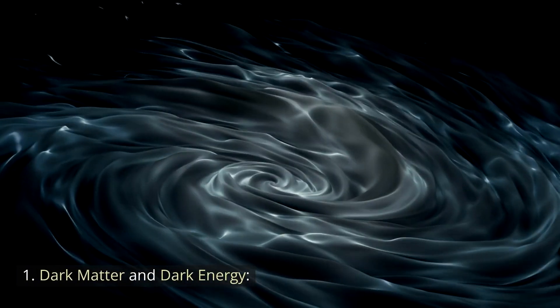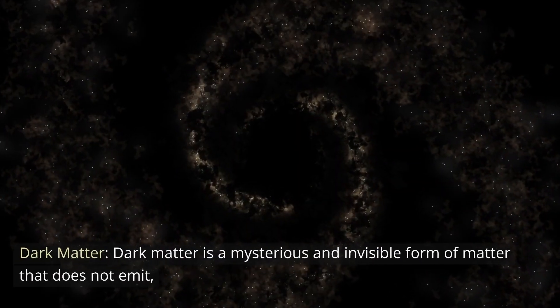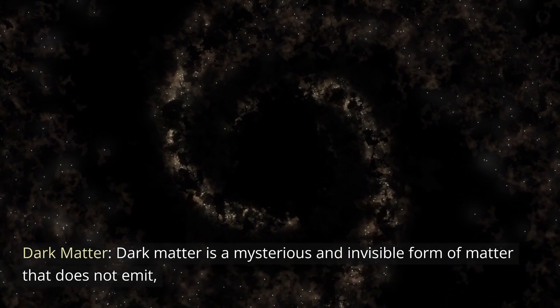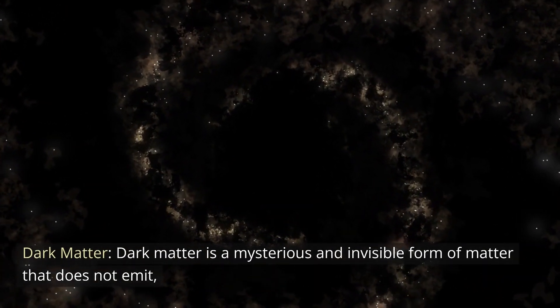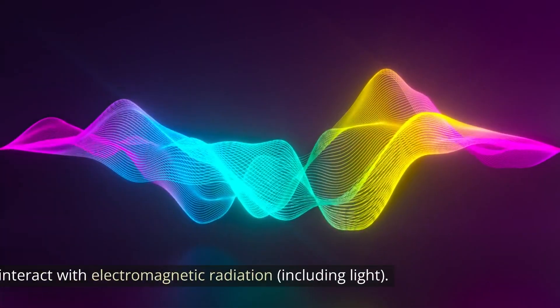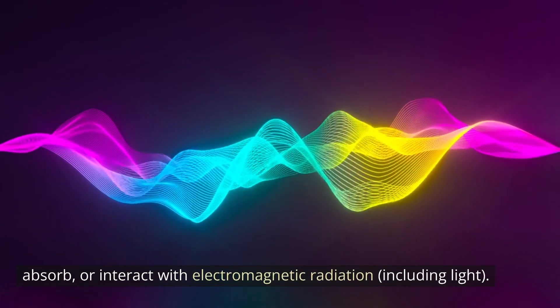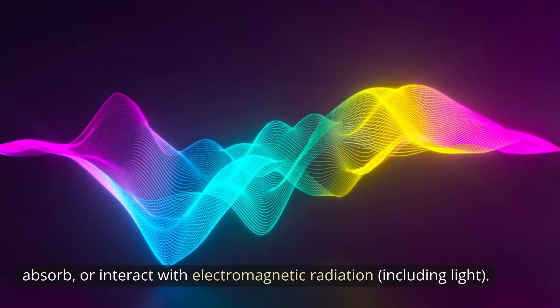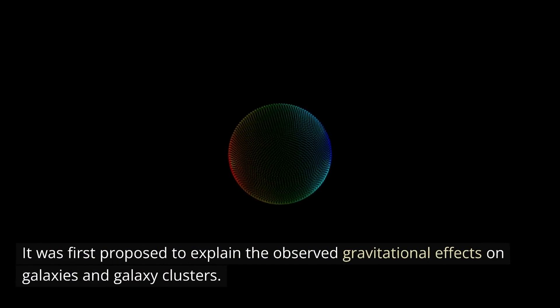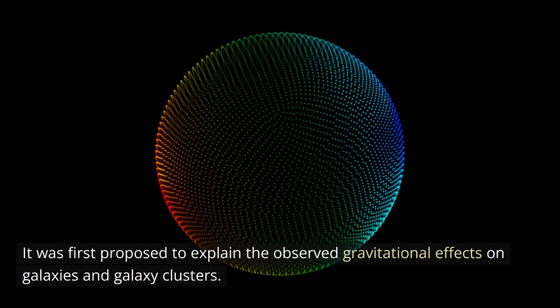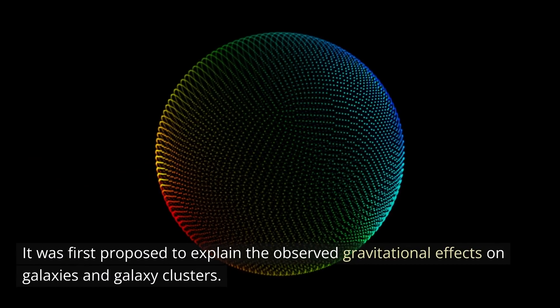Number 1. Dark Matter and Dark Energy. Dark matter is a mysterious and invisible form of matter that does not emit, absorb, or interact with electromagnetic radiation, including light. It was first proposed to explain the observed gravitational effects on galaxies and galaxy clusters.